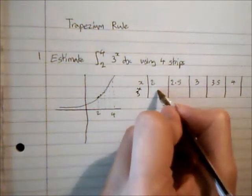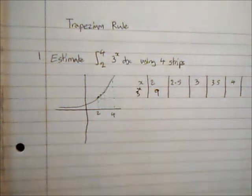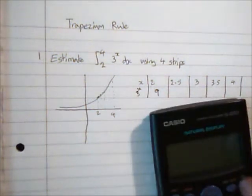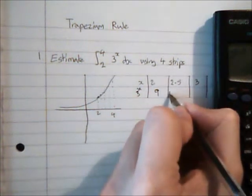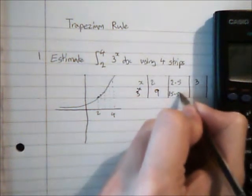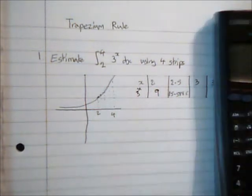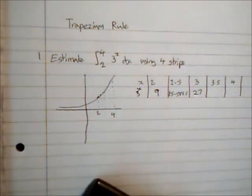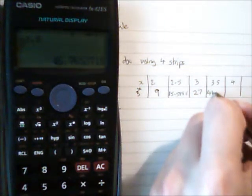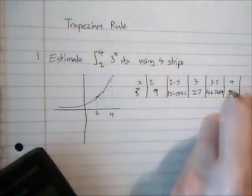So 3 to the power of 2 is 9. 3 to the power of 2.5, well I'm going to use my calculator here. I'm going to use four decimal places, and normally in the exam you're going to have a partially completed table and you can use the same accuracy as used in the table, or often they'll tell you. So this is 15.5885, 3 to the power of 3 is 27, 3 to the power of 3.5 is 46.7654, and then 3 to the power of 4 is a nice integer of 81.